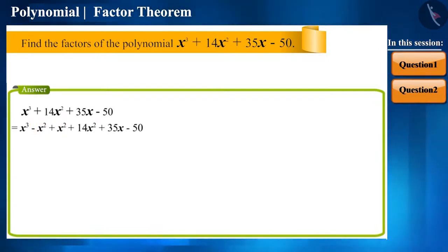Now, we can take it common. If you take x square common from the first two terms, you will get x square of x minus 1. The remaining x square plus 14 x square will become 15 x square plus 35 x minus 50. Now we can perform the same with 15 x square.